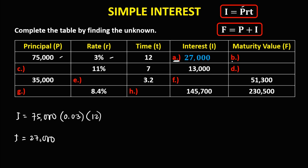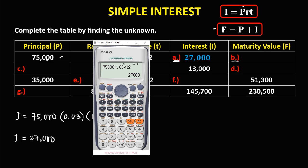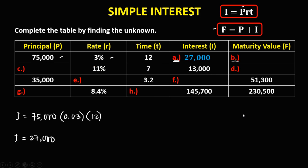To solve for B, that's the maturity value. Using the formula: maturity value equals principal plus interest. We have the principal 75,000, plus the interest 27,000. So therefore the maturity value is 102,000. So B is 102,000.